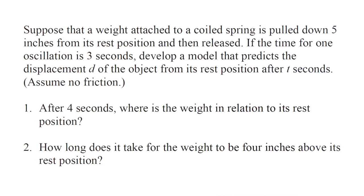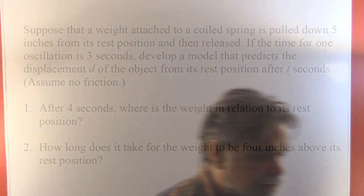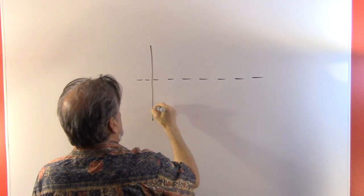This problem says: a weight attached to a coiled spring is pulled down five inches from its rest position and then released. If the time for one oscillation is three seconds, develop a model that predicts the displacement d of the object from its rest position after t seconds, assuming no friction. We'll also use the model to predict the weight's position after four seconds and find when it is four inches above the rest position.